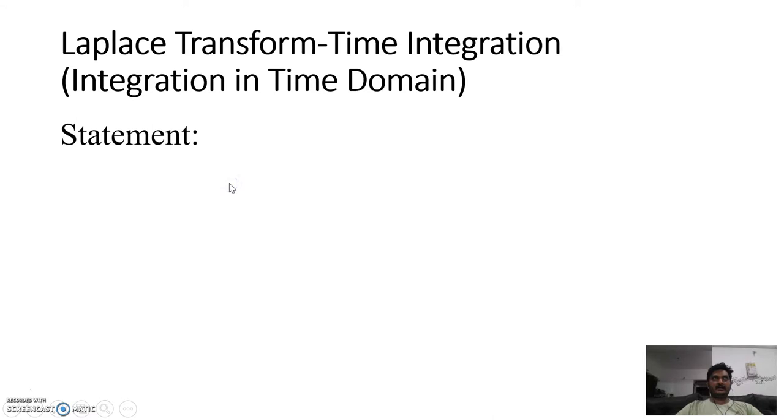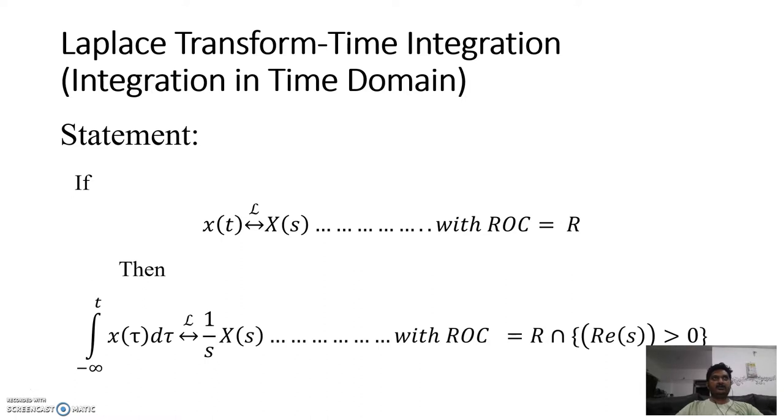This property states that if the Laplace transform of x(t) is X(s) with ROC of R, then the integration from minus infinity to t of x(τ) dτ will have a Laplace transform of (1/s)X(s) with ROC equal to R union {Re(s) > 0}.